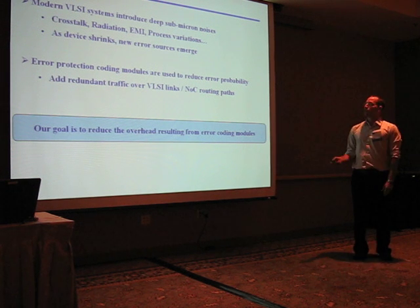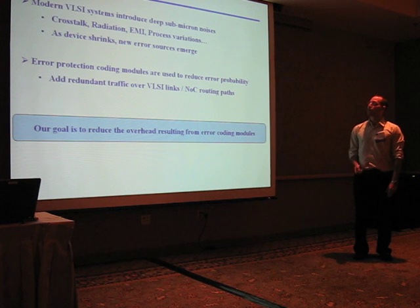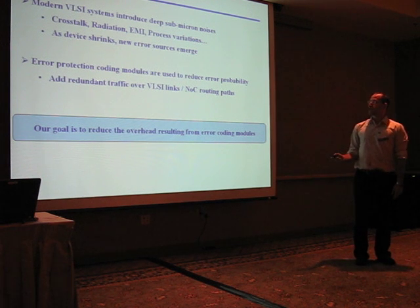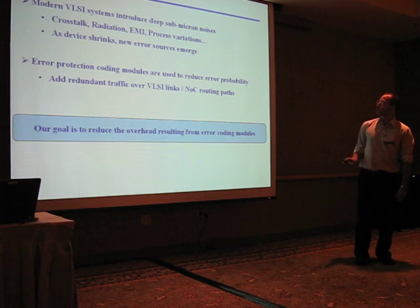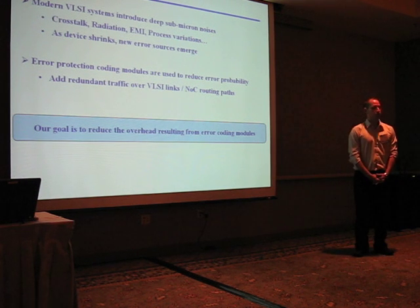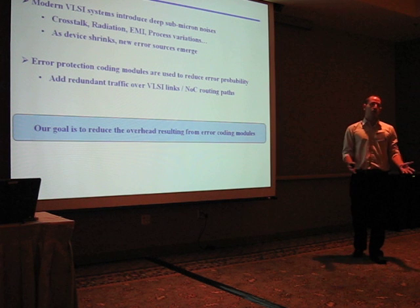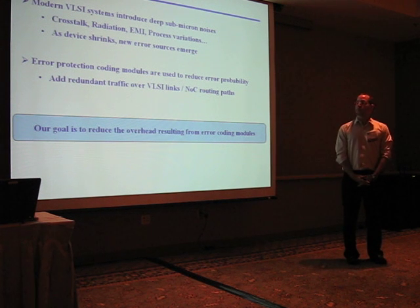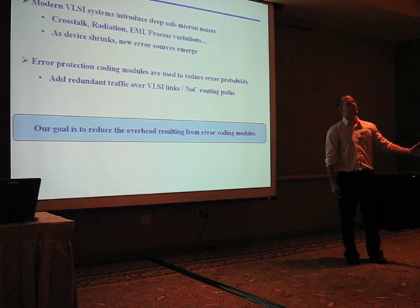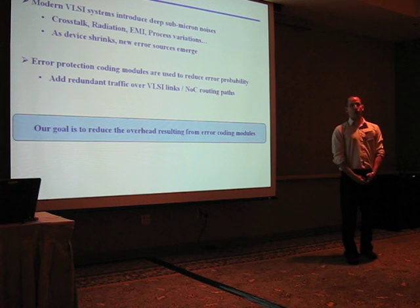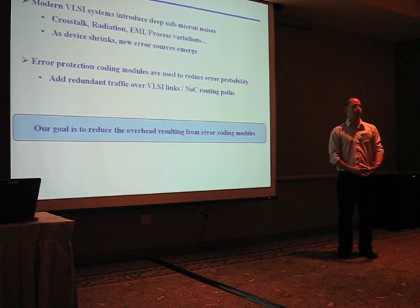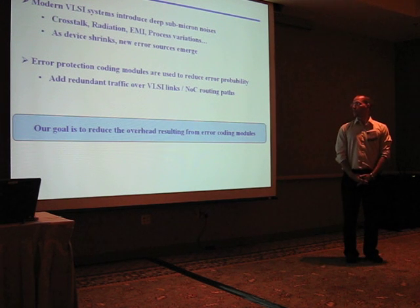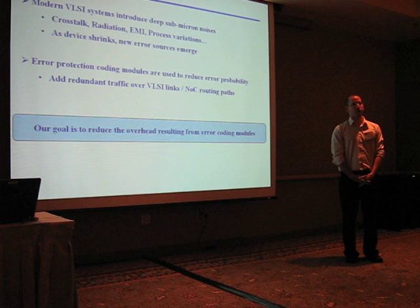In order to deal with those deep sub-micron noises, we use error protection coding modules to reduce the error probability, such as parity, the known parity circuit. Or if the error probability is high, we would like to use more advanced error encoding modules such as BCH or Reed-Solomon, which introduces many parity bits.